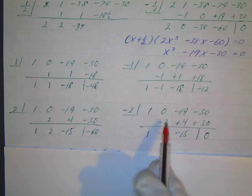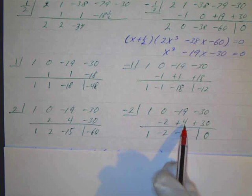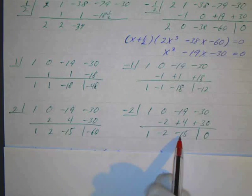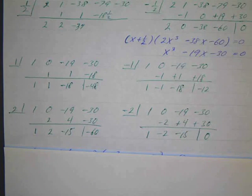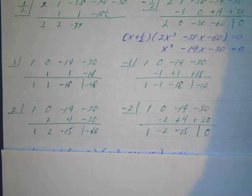1, negative 2 times 1 is negative 2. Negative 2 times negative 2 is positive 4. Negative 19 plus 4 is negative 15. Positive 30, there's my 0. Go through and check and make sure you're doing the synthetic division correctly if you have any reservations about that.